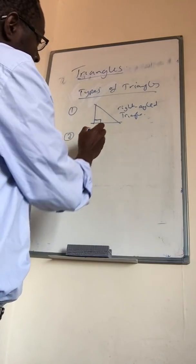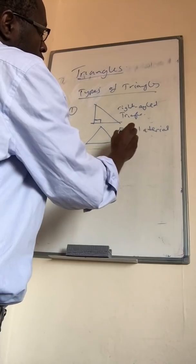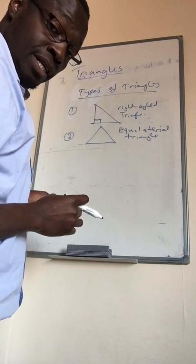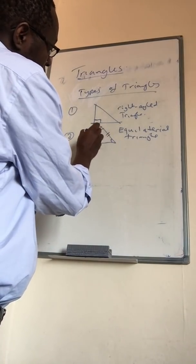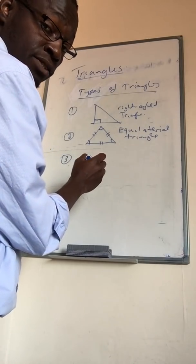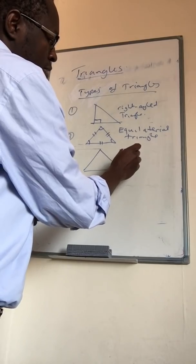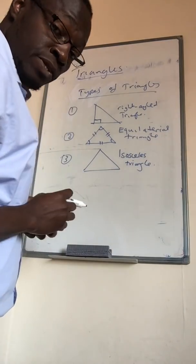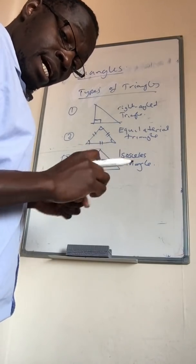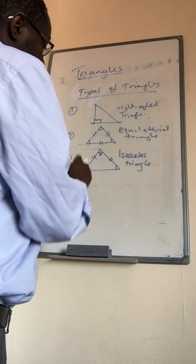Number two, we have what is known as an equilateral triangle. An equilateral triangle has equal sides and equal angles — so all the angles inside are equal and all the sides are also equal. Number three, we have what is called an isosceles triangle. An isosceles triangle has two equal sides and two equal angles — this side is equal to that one, and that angle is equal to that one, except the third is not equal to the two.